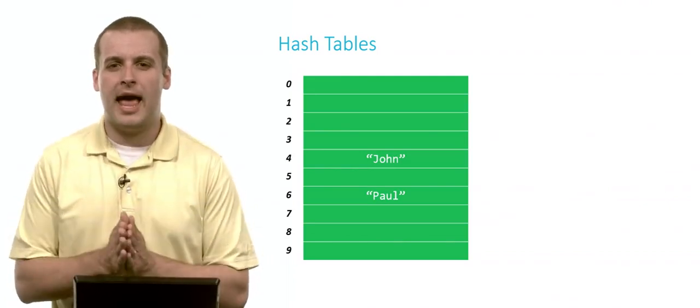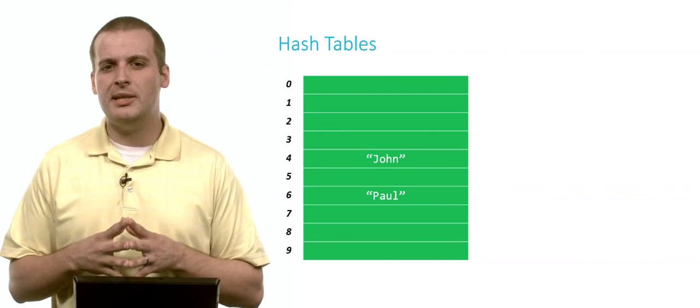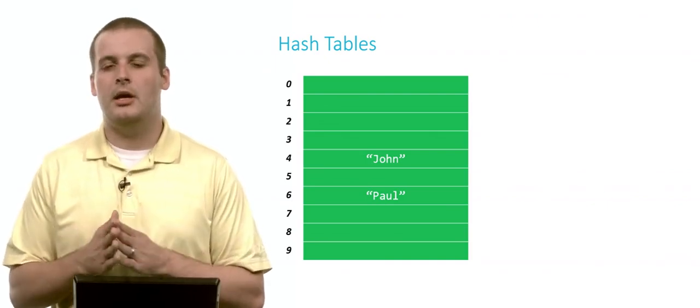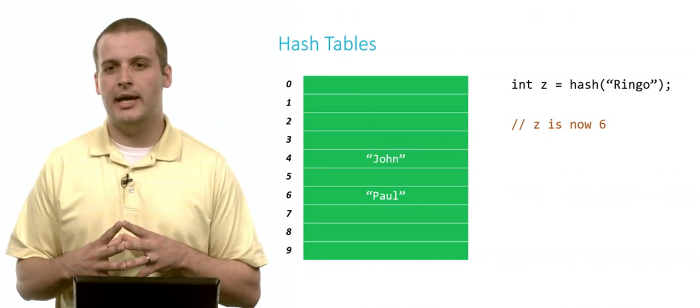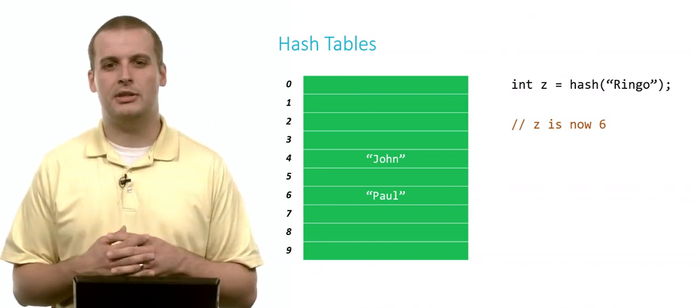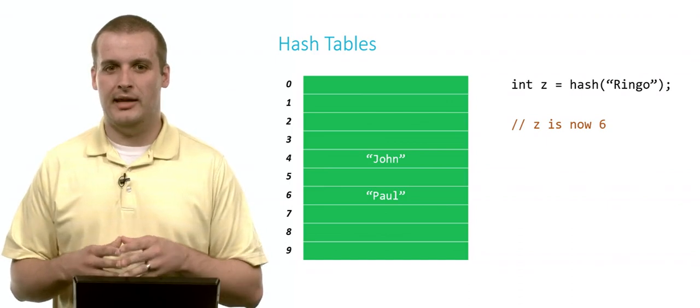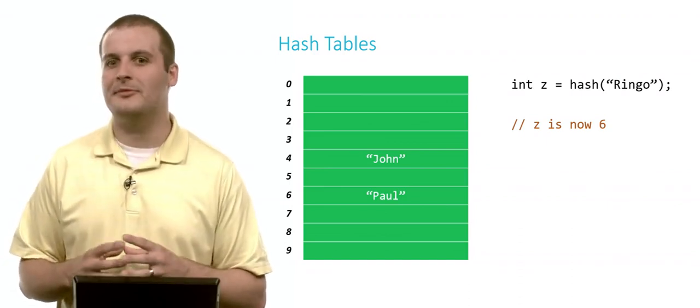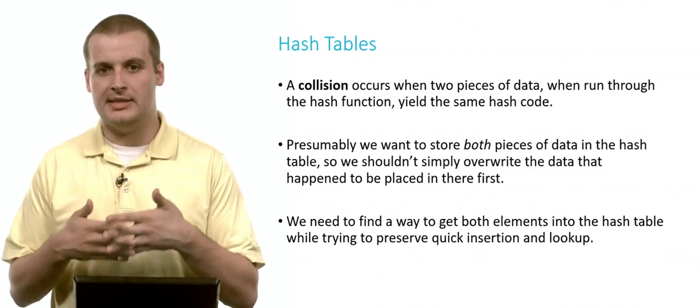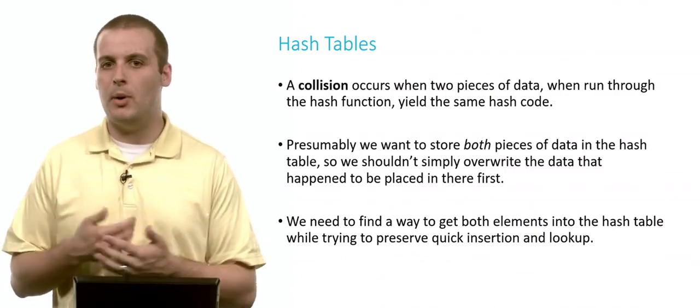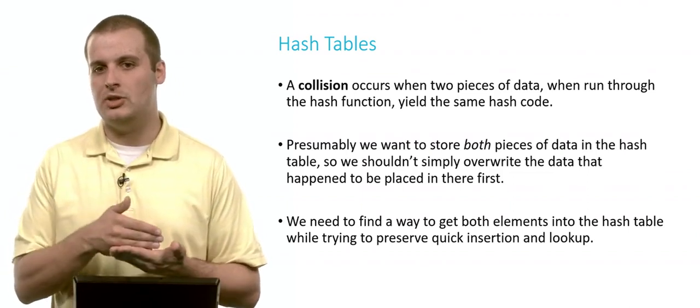So let's revisit this hash table for a second. This is where we left off after we inserted John and Paul into this hash table. Do you see a problem here? You might see two. But in particular, do you see this possible problem? What if I hash Ringo, and it turns out that after processing that data through the hash function, Ringo also generated the hash code 6. I've already got data at array location 6. So it's probably going to be a bit of a problem for me now. We call this a collision. And a collision occurs when two pieces of data run through the same hash function, yield the same hash code. Presumably, we still want to get both pieces of data into the hash table. Otherwise, we wouldn't be running Ringo arbitrarily through the hash function. We presumably want to get Ringo into that array.